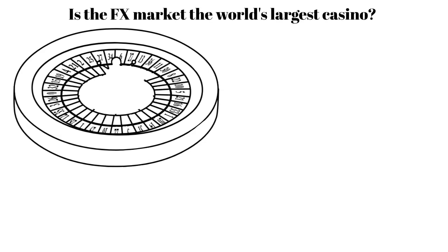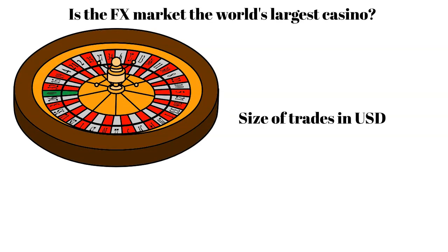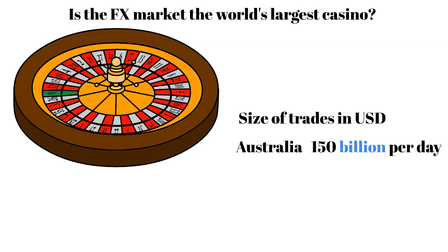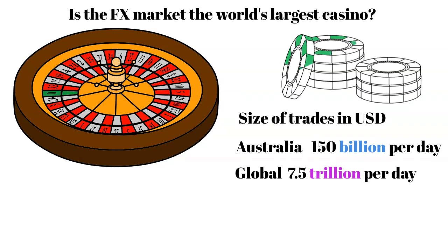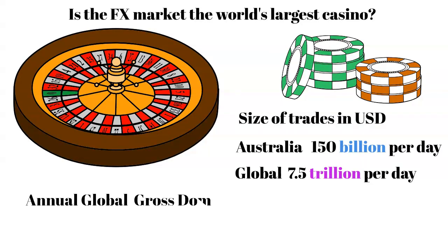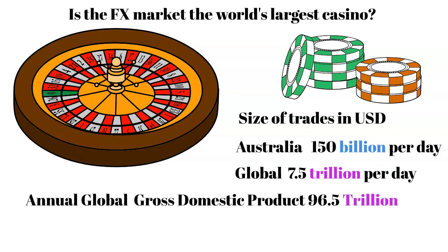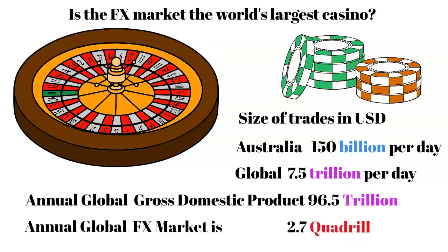The size of the global foreign currency trade is beyond comprehension. On an average day Australian banks will do US$150 billion of FX trades. Globally the FX trade is US$7.5 trillion per day, compared to the world's GDP which is US$96.5 trillion per year. FX trade runs at 28.5 times the entire world's gross domestic product.